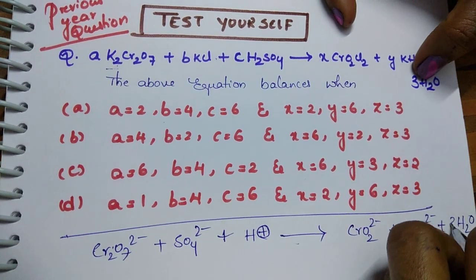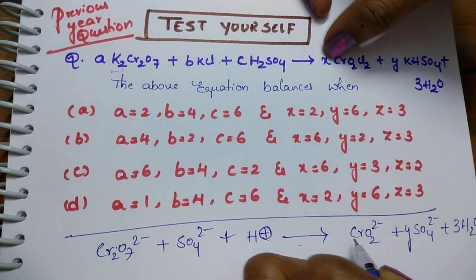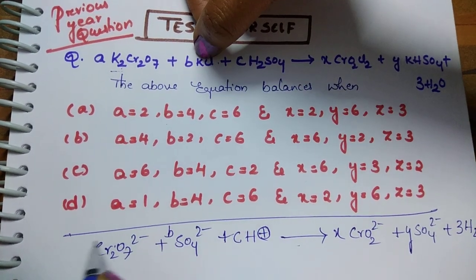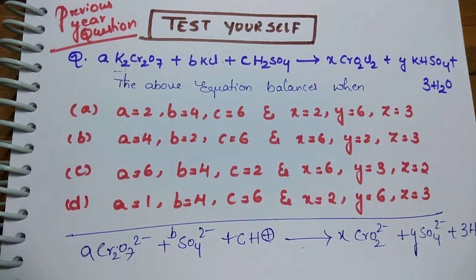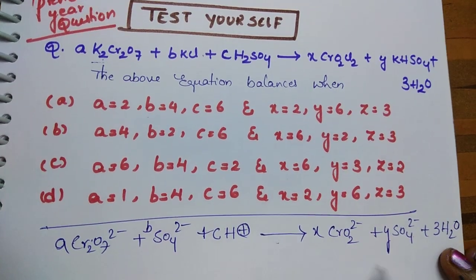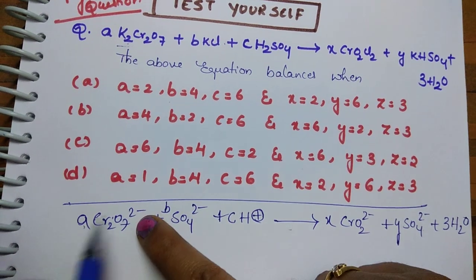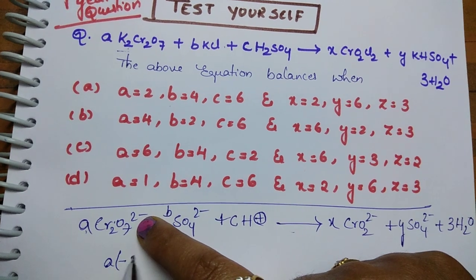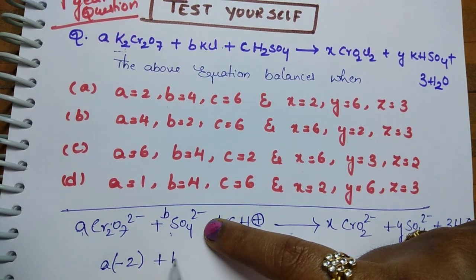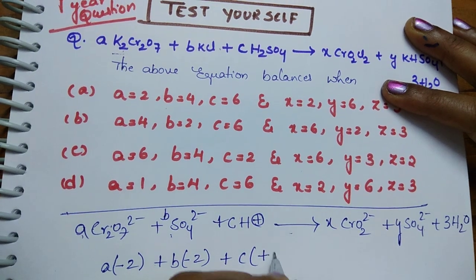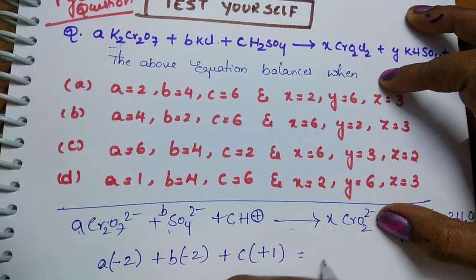This is how many? This is y, this is x, and this is c, this is b, this is a. Now get the relation by using this ionic equation. What you do is find the relation: a into (-2) plus b into (-2) plus c into (+1).